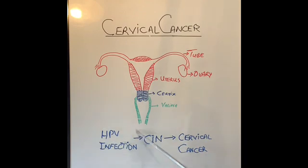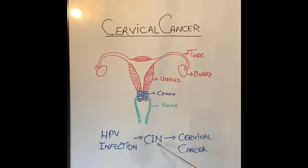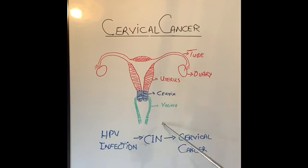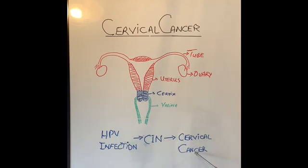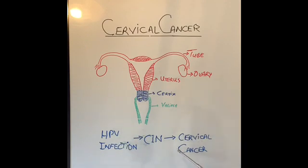From HPV infection, the first thing that happens in a very small percent of women is they develop a condition called CIN — cervical intraepithelial neoplasia. This is slight changes in the cells of the cervix which are precancerous, and if they are treated early, then these women will not progress to develop cervical cancer. If this is not treated, then they will develop cervical cancer. From infection to CIN to cancer can take anywhere from five to ten years. That is why screening every five years — or more frequently in women developing some cell changes — helps keep an eye on development of cancer.